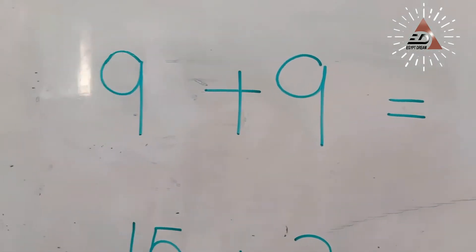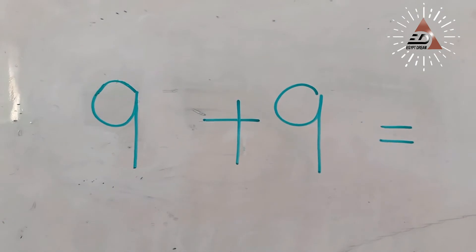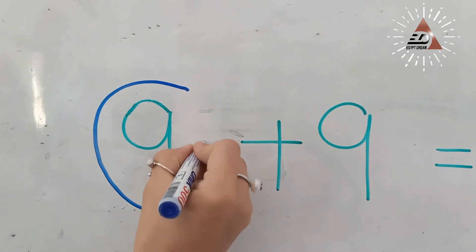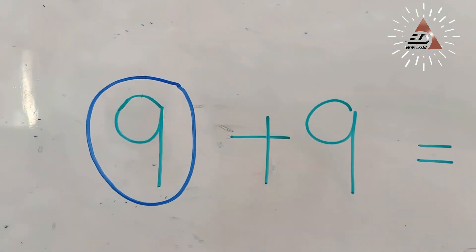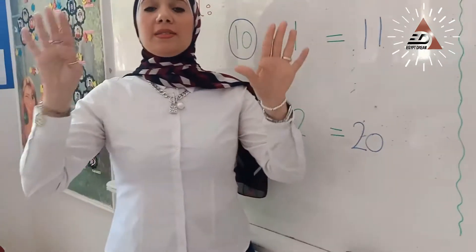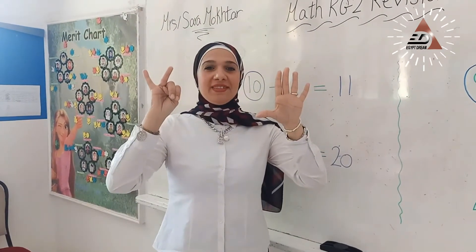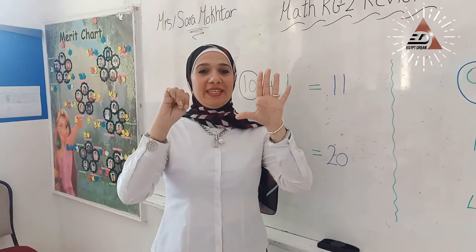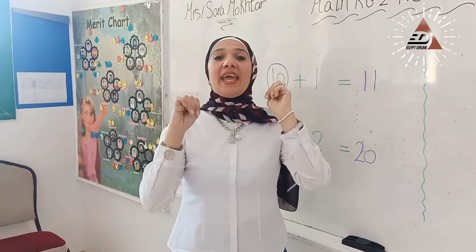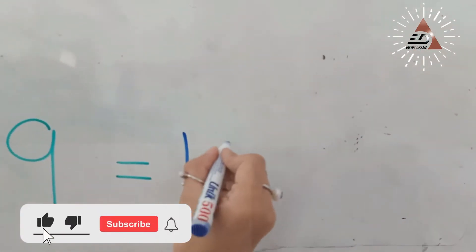Another one. 9 plus 9 again. They are the same. Now, we are going to circle one of them, and put another 9 on your hand. Count after 9: 10, 11, 12, 13, 14, 15, 16, 17, 18. Write number 18 after the equal sign.